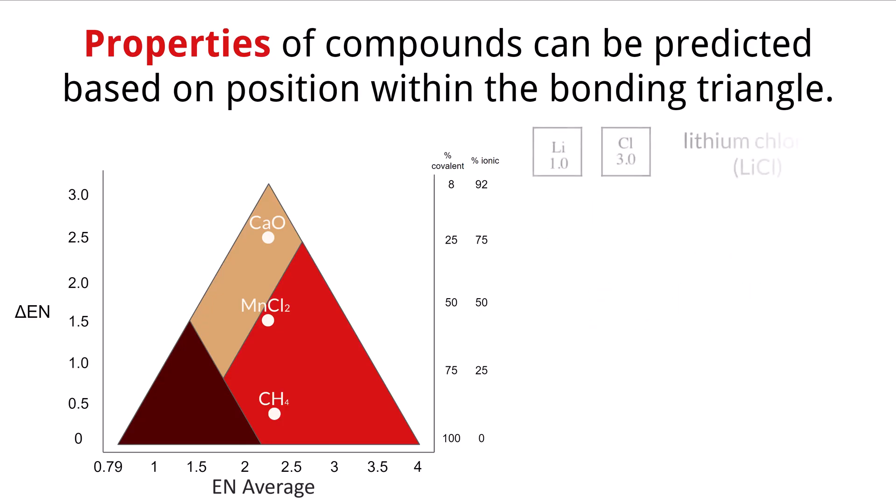Now give it a try. Where would the compound lithium chloride fall on our graph? What kind of bond would LiCl make? Pause the video to calculate and hit play when you have the answer. If you said ionic, you are correct. We see the electronegativity difference of 2.0 and an average of 2.0 fall in ionic range. Great job!